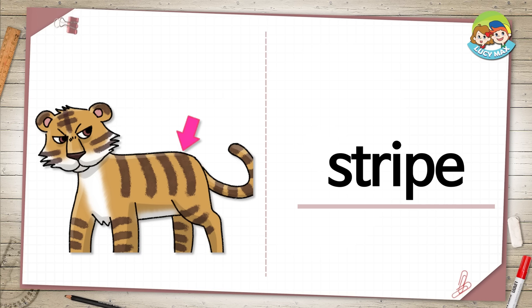Look at the tiger in the picture. The lines on it are called stripes. The tiger has many stripes. Do you have stripes on your shirt?